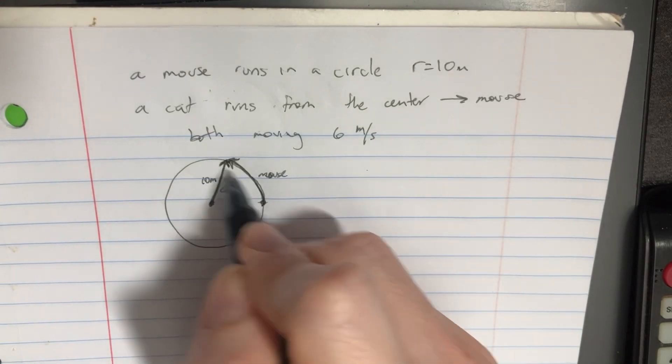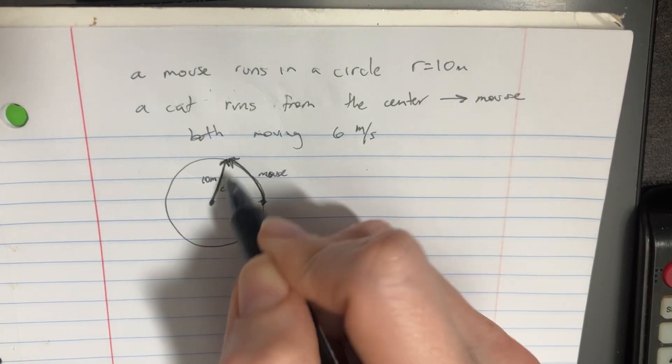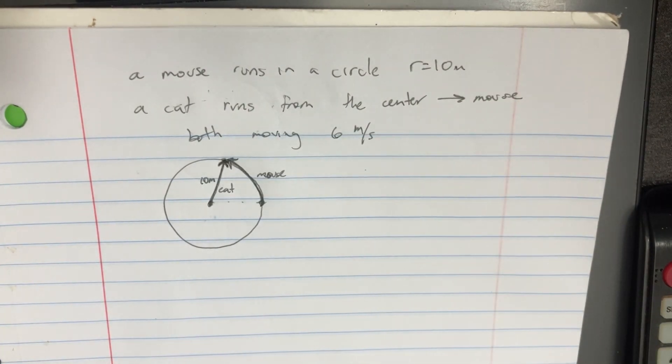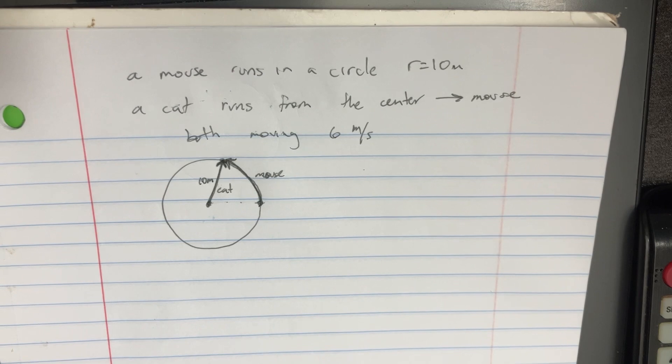In this problem, we've got a mouse running around this circle and this cat is trying to chase it and catch up to it at the same point over here. So we're just trying to figure out how much time that would take.